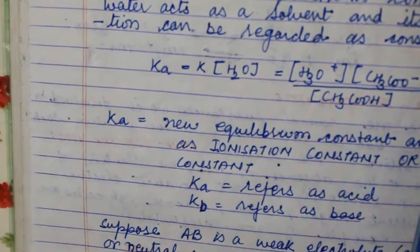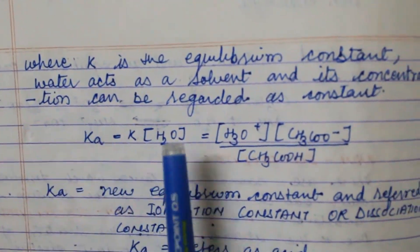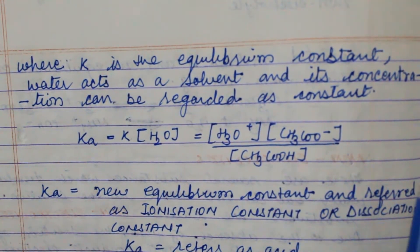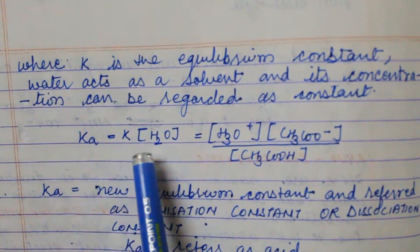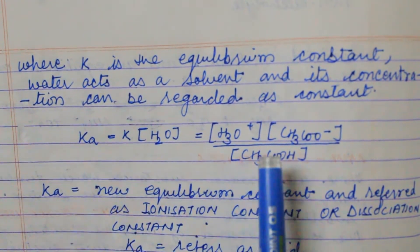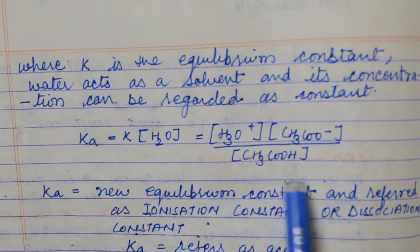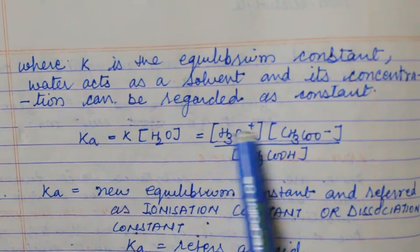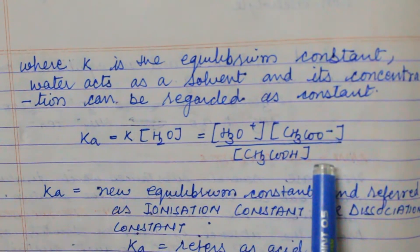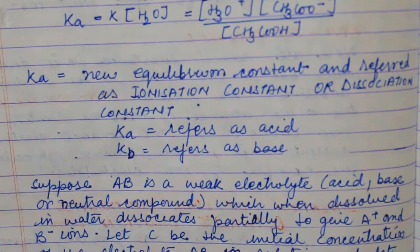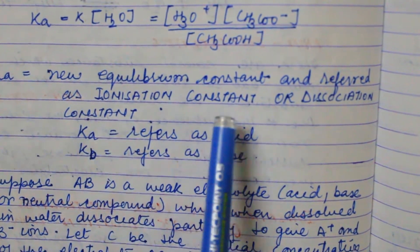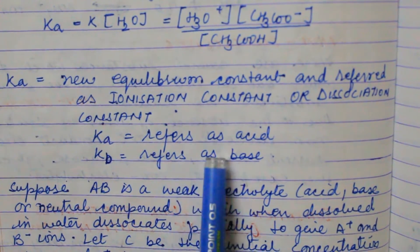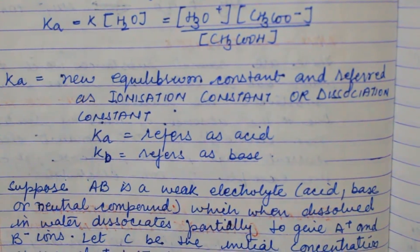Where K is the equilibrium constant, water acts as a solvent and its concentration can be regarded as constant. This gives us Ka, where K of water is constant. Ka is the new equilibrium constant, referred to as the ionization constant or dissociation constant. Ka refers to acid and Kb refers to base.